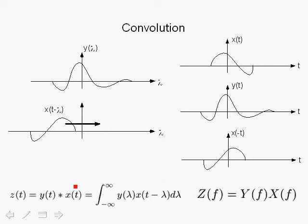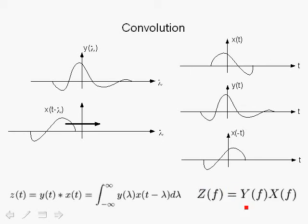An important property of the Fourier transform is that the Fourier transform of the convolution of two signals is the multiplication of their Fourier transforms. So the Fourier transform of z(t) equals Z(f) = Y(f) · X(f). Convolution in the time domain is multiplication in the frequency domain — this is a very important Fourier transform property.